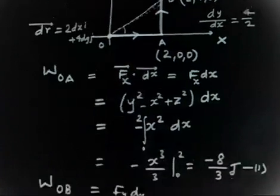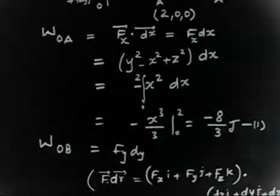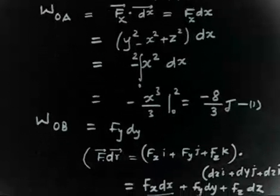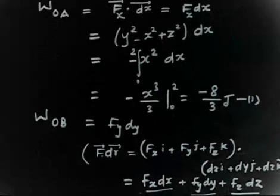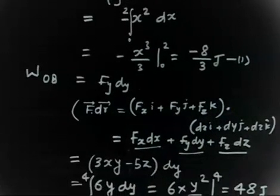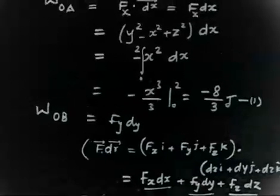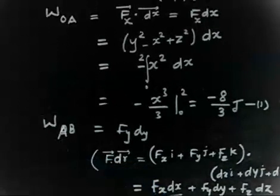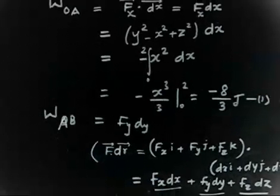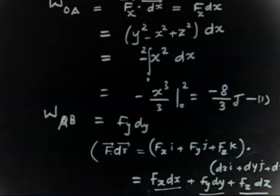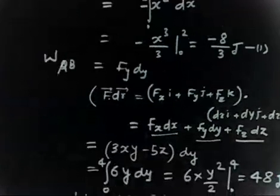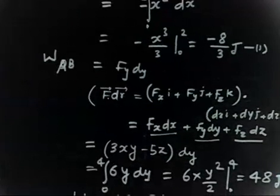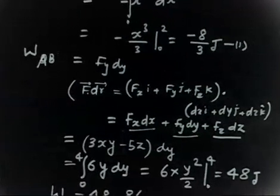So this is the problem: find the total work done going from O to A and then A to B. The work done O to A is -8/3, and work done A to B is 48, giving a total of 48 - 8/3. This is quite easy. We will discuss the next problem.